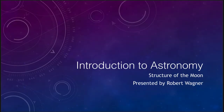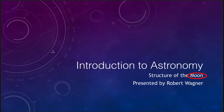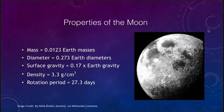Greetings and welcome to the introduction to astronomy. In this video we are going to look at the structure and features that we see on the moon, our closest celestial neighbor here on the earth. We'll want to look at some of the various properties and features that we can actually see on the moon, and the type of rocks that have been explored and brought back to the earth from the moon by the Apollo astronauts. Let's get started with some of the basic properties of the moon.